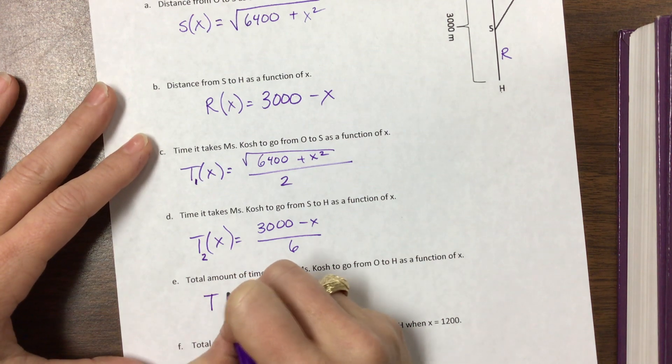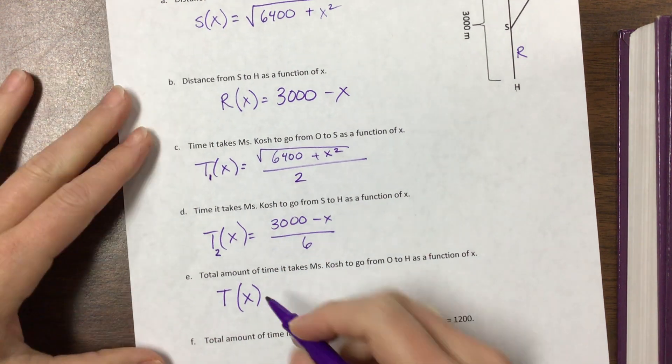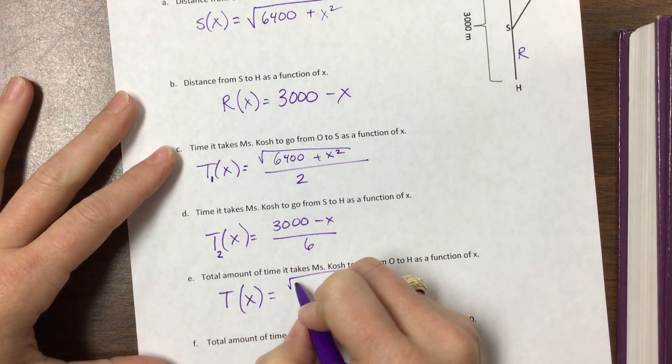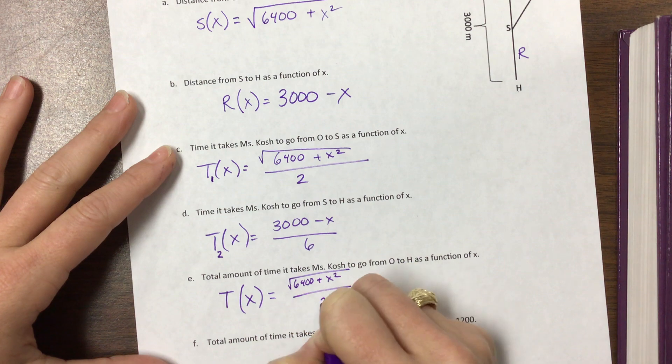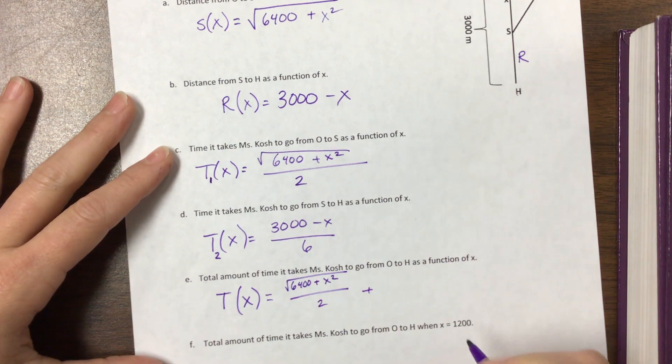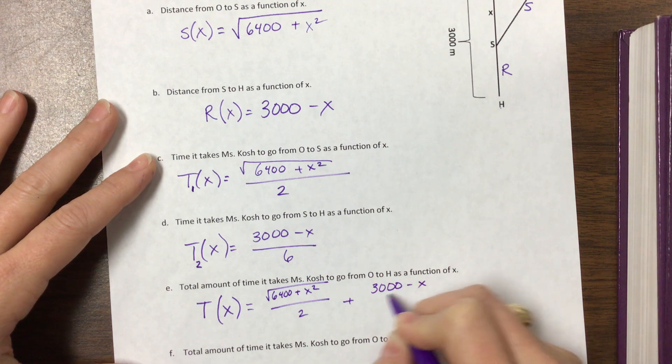So these two, maybe I should have denoted that this is T1 of X and this is T2 of X. So this is the time to swim, this is the second one, the time to run. So the total amount of time, let's just call that total T. So yes this is T1, this is T sub 2, is going to be equal to square root of 6400 plus X squared divided by 2 plus 3000 minus X divided by 6.